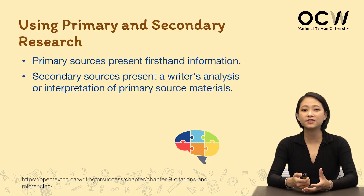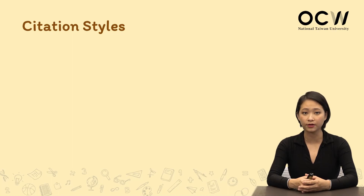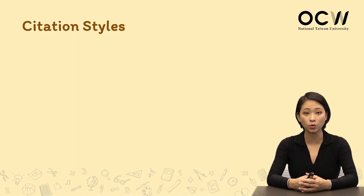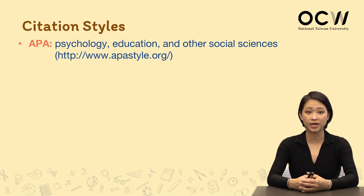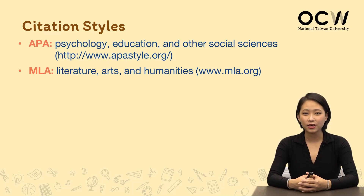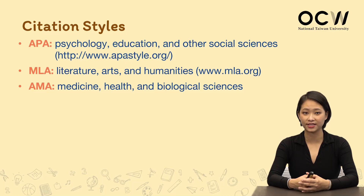Let's take a look at what different citation styles there are. When we're talking about citation style, it's important to know that although there are many different types, each discipline would adopt a particular type only. APA is commonly used in the field of psychology or education. In terms of MLA, usually literature fields, the arts, or the humanities use them. And in terms of AMA, those in the medical or health field would adopt these types of citation styles.